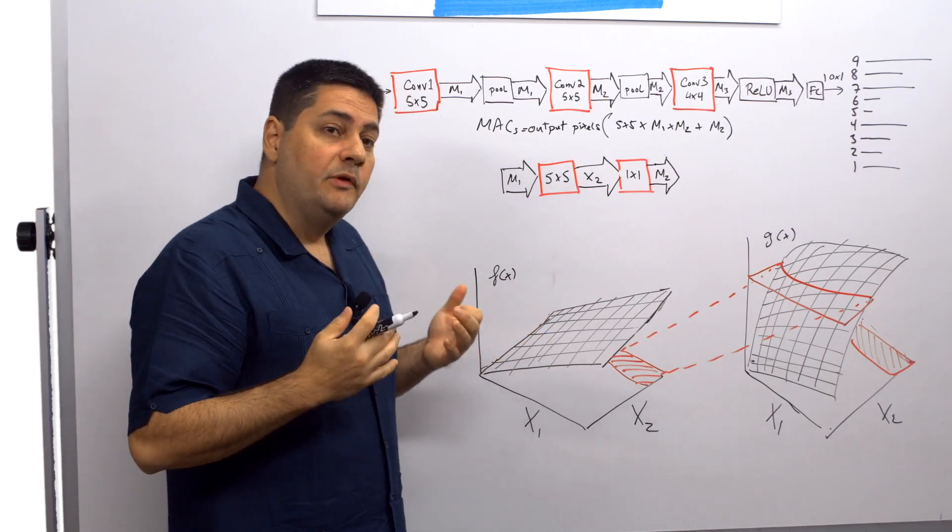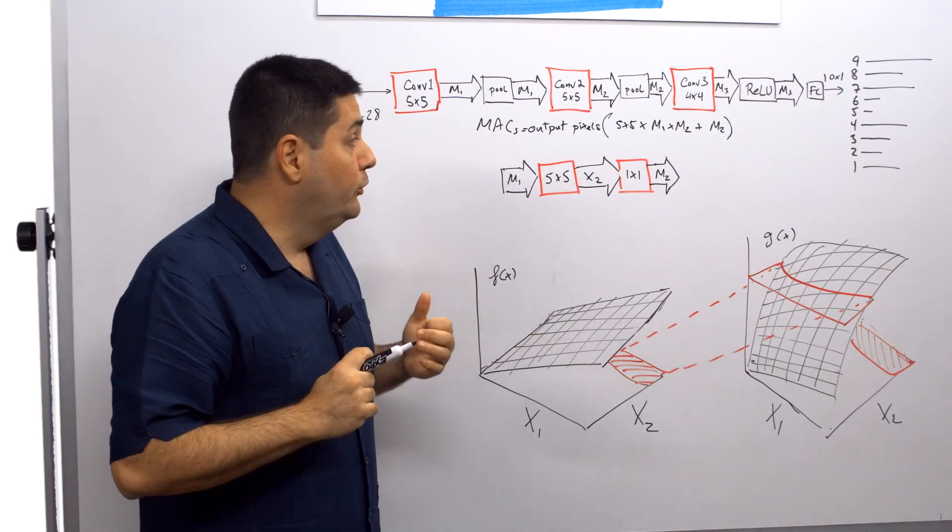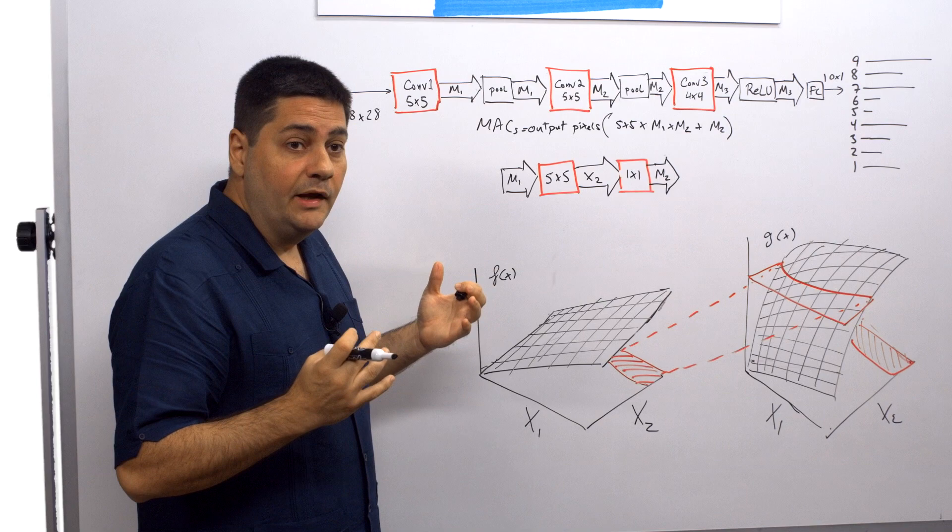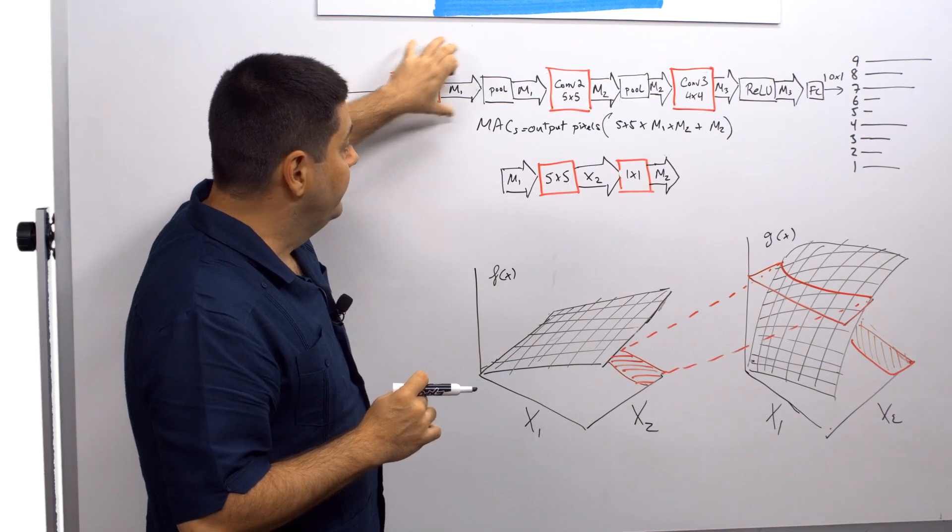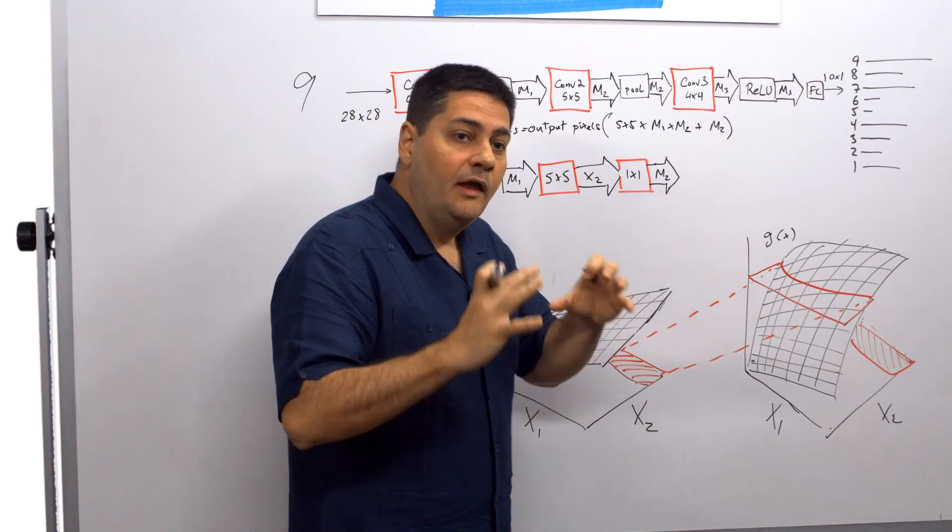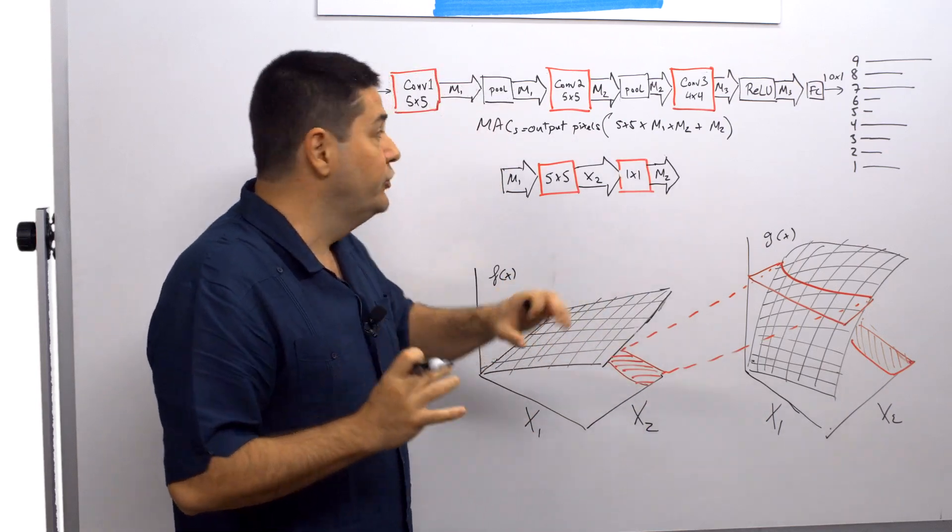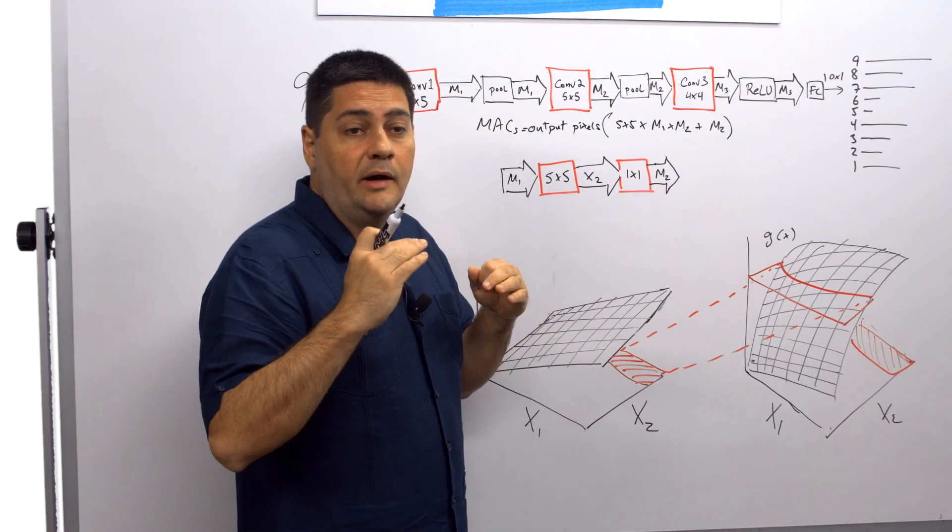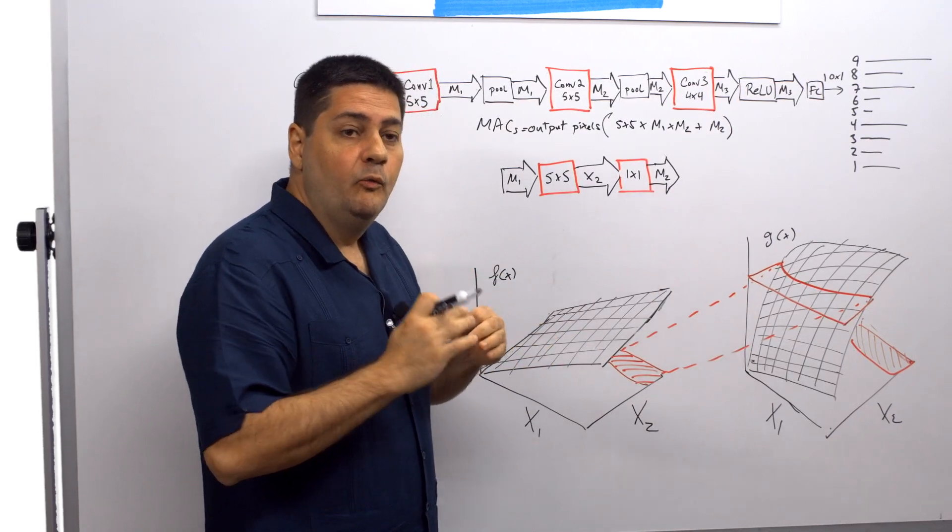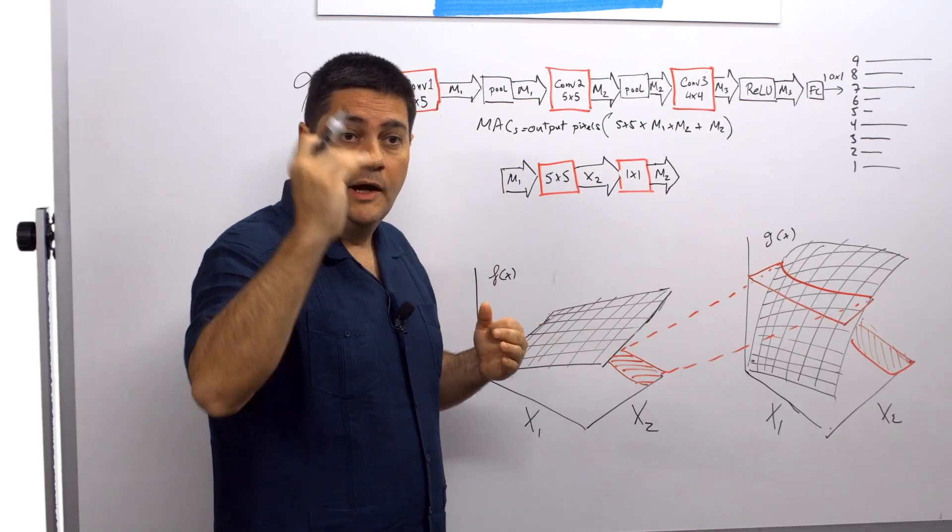So the way we're going to do the reduction in complexity is we're going to add the complexity of all these blocks and find what is the right proportion of reduction in each one of them to achieve reduction in complexity while maintaining the accuracy at the highest level possible.